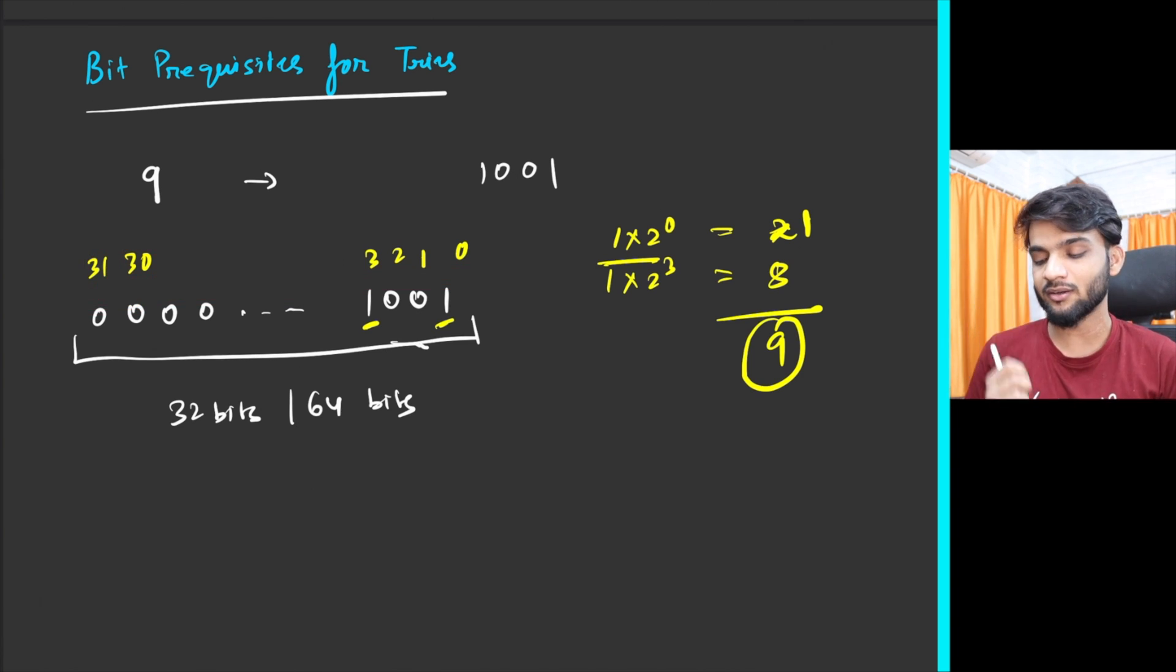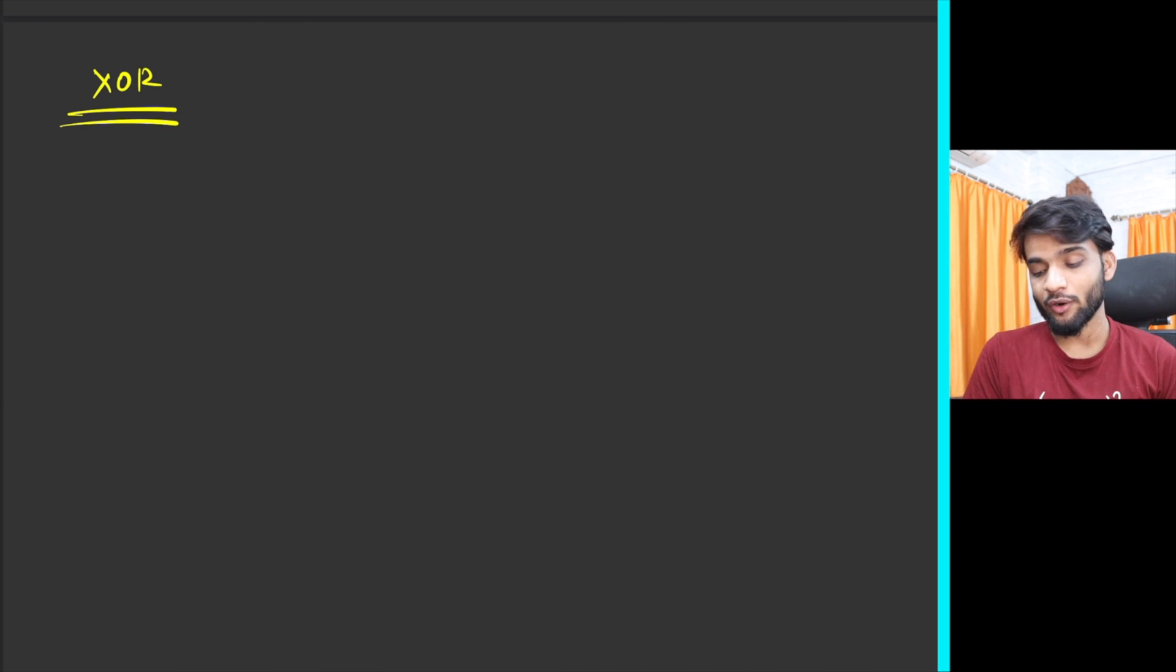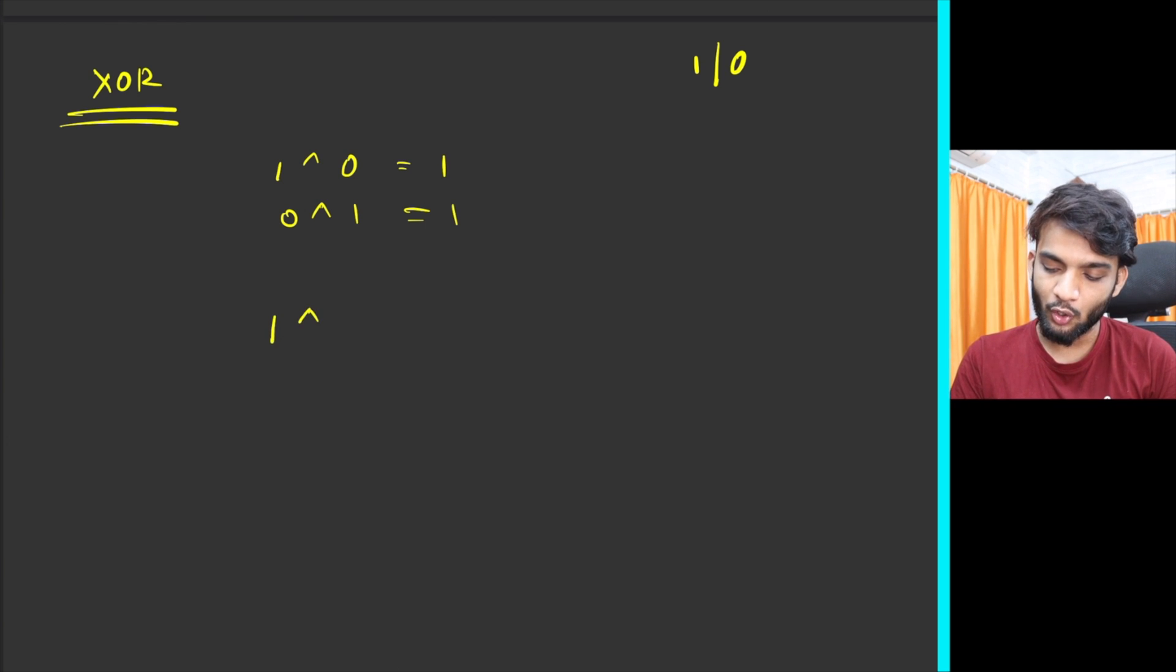The next prerequisite will be XOR. What does XOR state? Binaries will have only ones and zeros. XOR states that if you are doing XOR of different bits, you get one. Whenever you do XOR of different bits you get one.